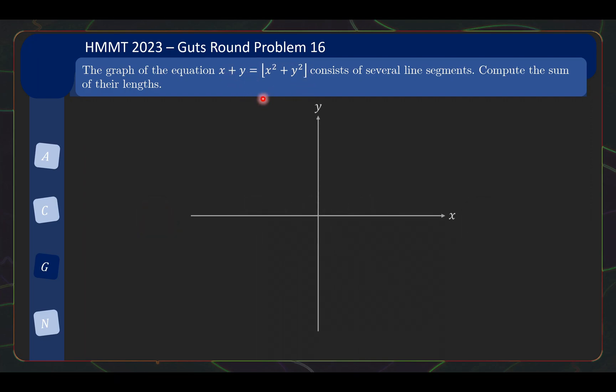And to do this, we can simply break up the graph into a few cases. So we see a floor function, likely the way to approach it is to consider what if the value evaluated to zero, evaluates to one, and so on.